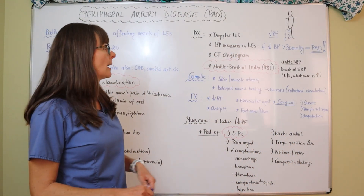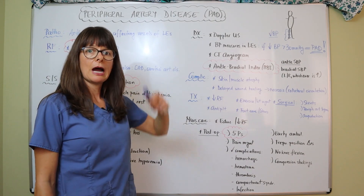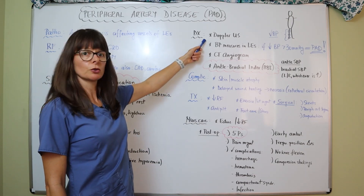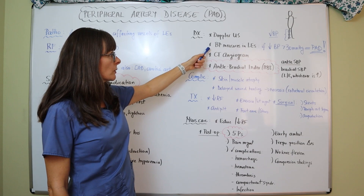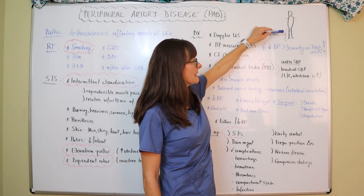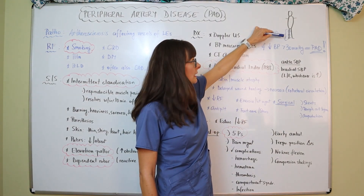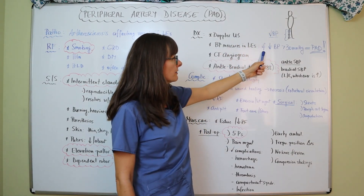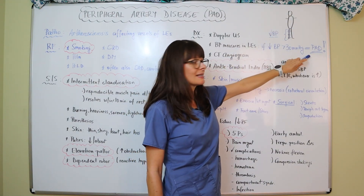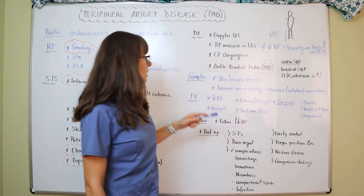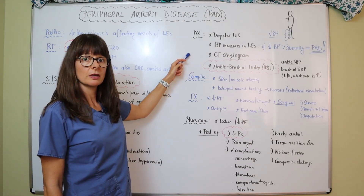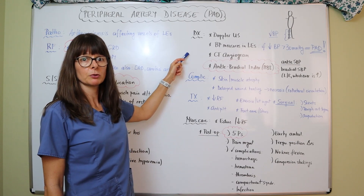For diagnostic tests, to assess the severity of atherosclerosis obstruction in the lower extremities, we use a Doppler ultrasound to check blood flow and measure blood pressure at three locations: the thigh, just below the knee, and just above the ankle. If the blood pressure drops from one location to the next by more than 30 mmHg, that is diagnostic of PAD. We can also do a CT angiogram with contrast to see the severity and location of obstruction and whether collateral circulation has developed.